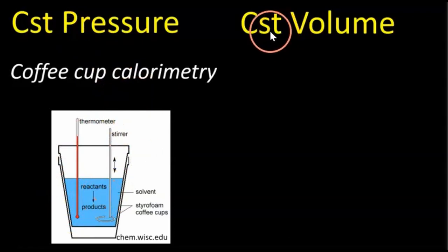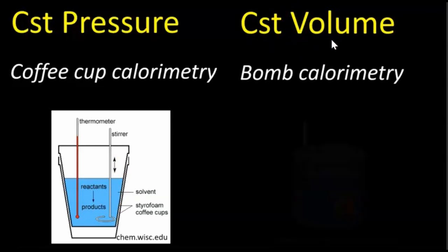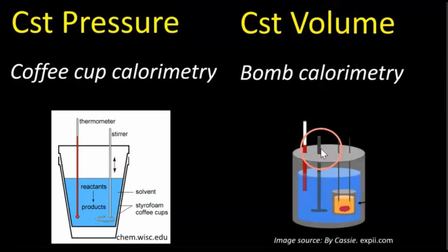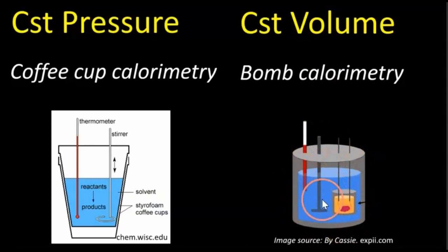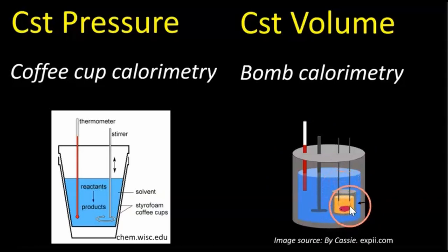The other type is constant volume calorimetry, usually performed at second and third year level. You have a steel box inside — this is the bomb — and when you ignite the wires it combusts and burns. It's under constant volume.